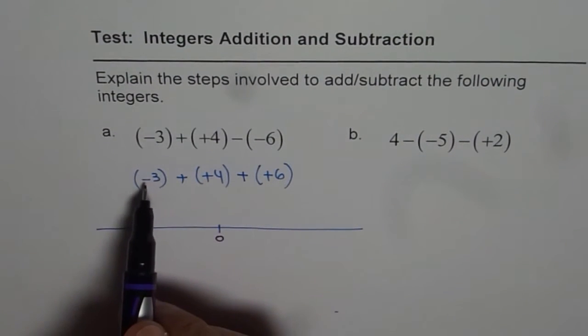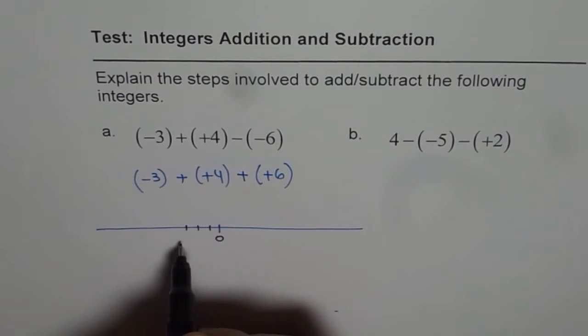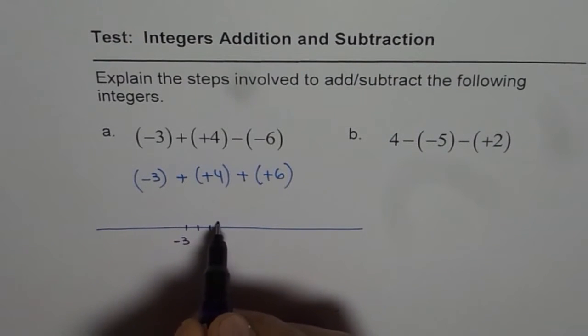So, first, let us go to minus three. Minus three is three units left. One, two, three. So, that is minus three. So, that is the first step.